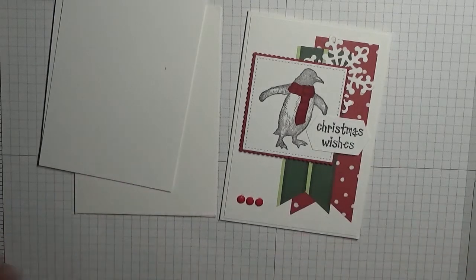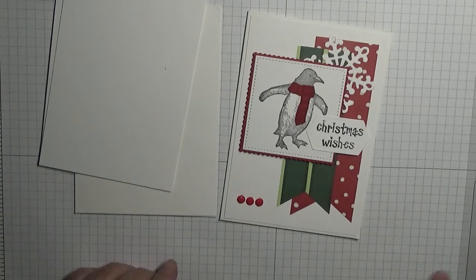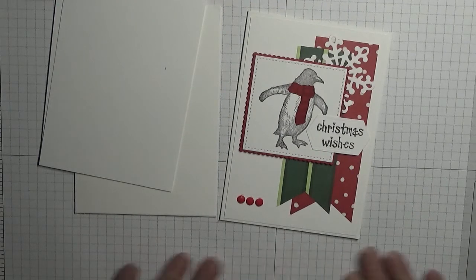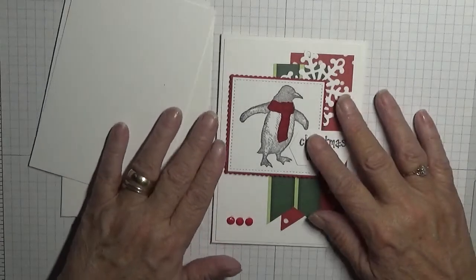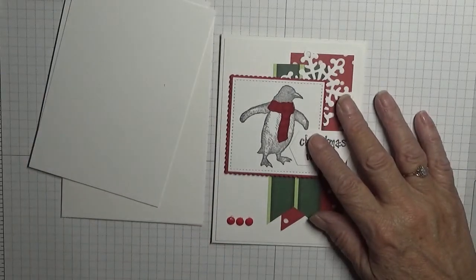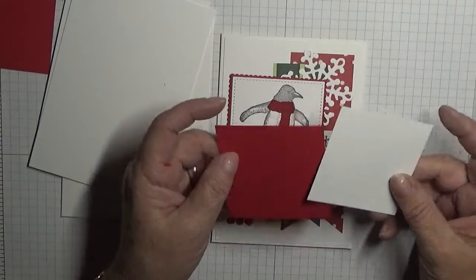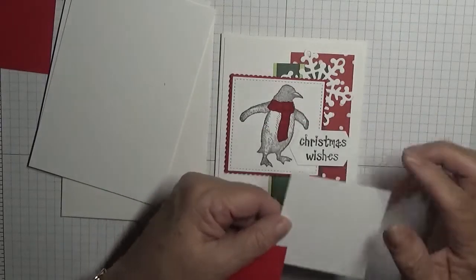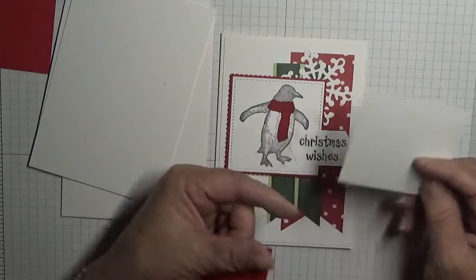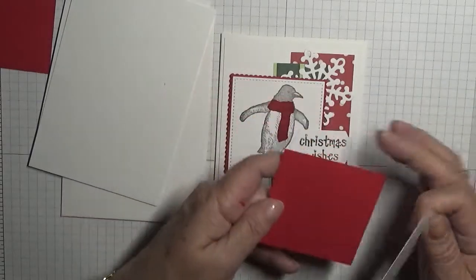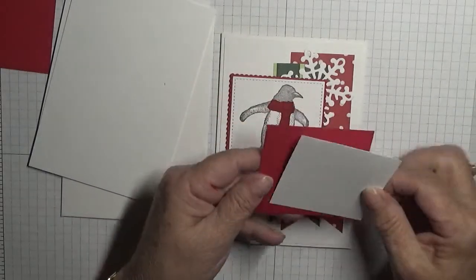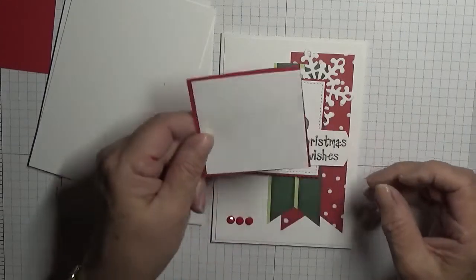That's out and ready. These dimensional bits getting on my nerves. Right, I also used a white piece of cardstock at two and five eighths square, so two and five eighths by two and five eighths and a red piece at two and three quarters by two and three quarters. That went on there.